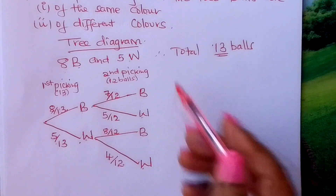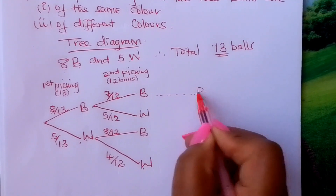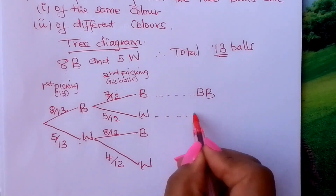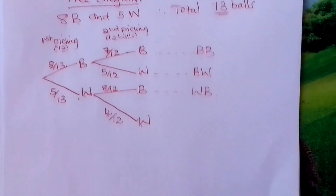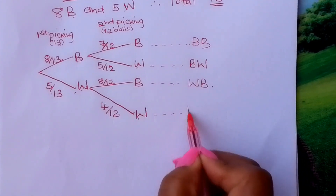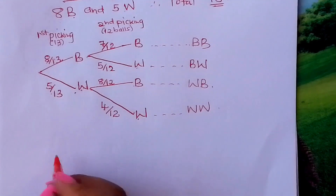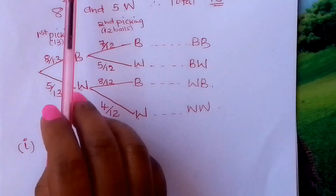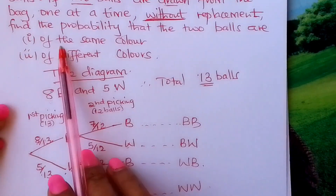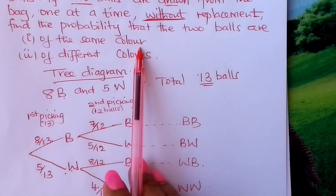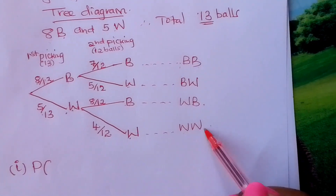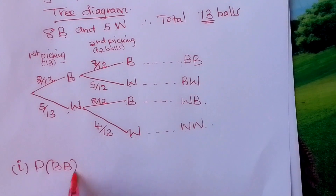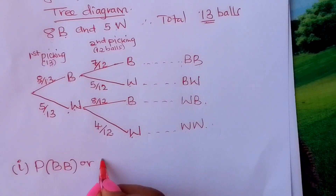This completes our tree diagram. You now write down the possible outcomes: BB, BW, WB, and WW. From here you should be able to answer the questions. The first question is: find the probability that the two balls are of the same color. That means the probability of BB or probability of WW.